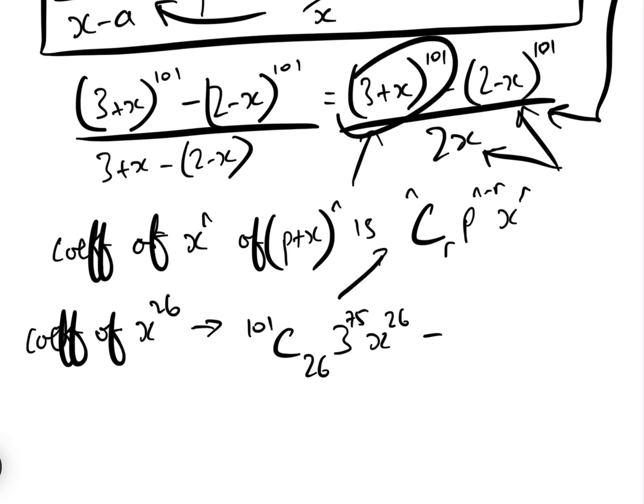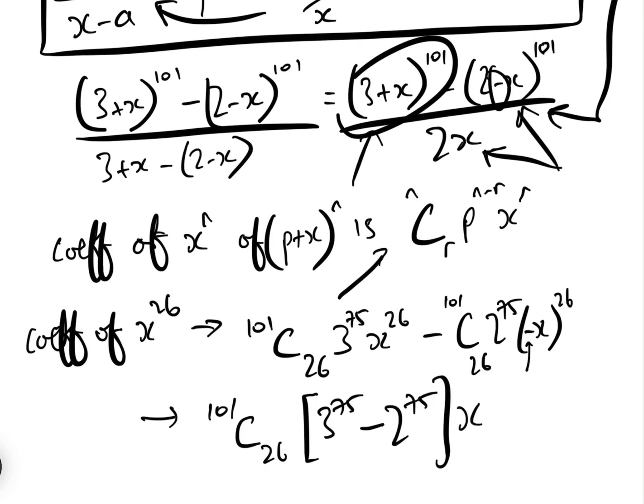And then minus here, 101C26, 2 to the 75 times minus x, because there's a minus here, minus x to the 26. And just simplifying that we get 101C26, 3 to the 75, minus—now this minus here, because it's the power of 26 we can ignore it—minus 2 to the 75, x to the 26.